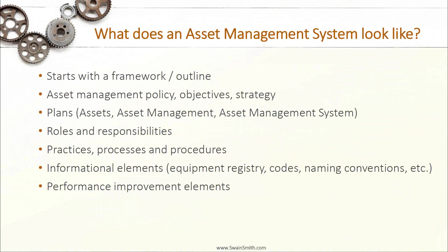What does an asset management system look like? It starts with a framework — an outline — followed by policy, objectives, and strategy. The policy sets the mandate, the objectives define what you want to accomplish, and the strategy establishes the strategic plan for how you'll accomplish those objectives. Then you get into the tactical side: the plans for how you're going to execute your asset management activities. Key elements include roles and responsibilities — everyone needs to know what they're responsible for — as well as practices, processes, and procedures. Great data and great information come from your processes.